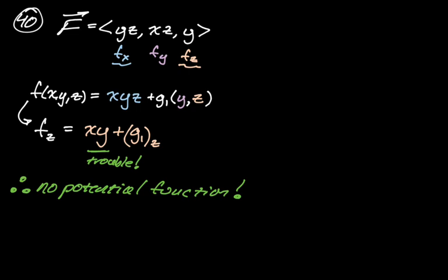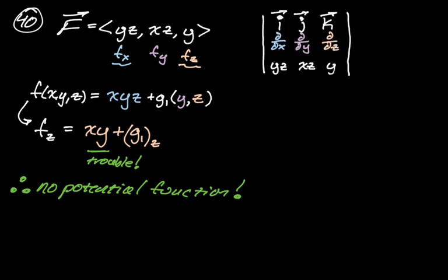One option for showing there's no potential function is to show that the mixed partial derivatives are not equal, and the easiest way to organize that is to find the curl. The curl is a 3×3 determinant with i, j, k in the first row; ∂x, ∂y, ∂z in the second row; and the components yz, xz, y in the third row. Computing the i component: ∂y(y) − ∂z(xz) = 1 − x.